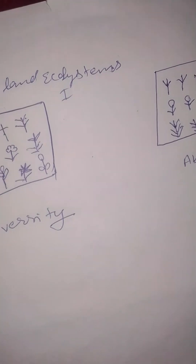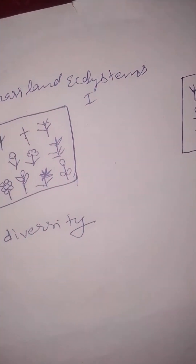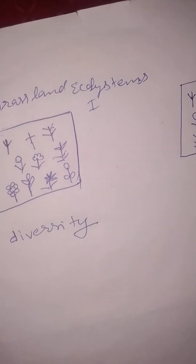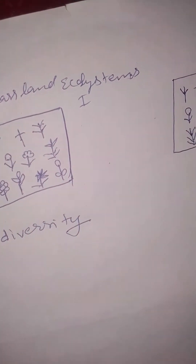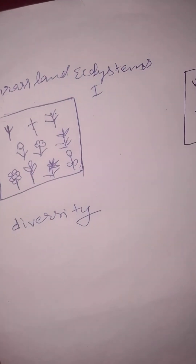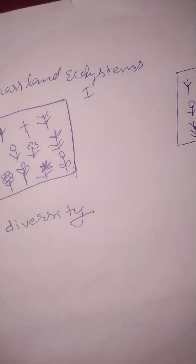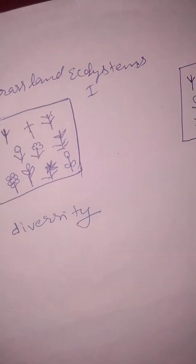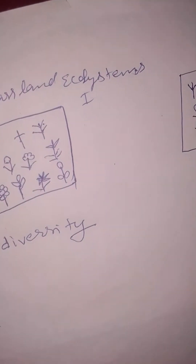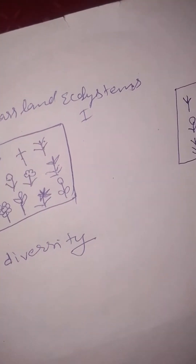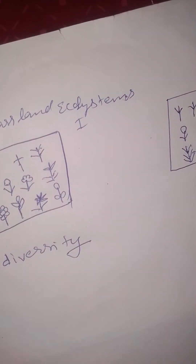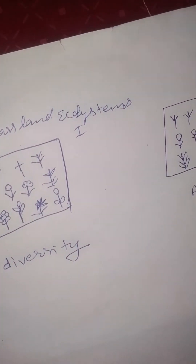For example, biodiversity in a tropical rainforest — tropical rainforests have more diversity compared to other ecosystems.